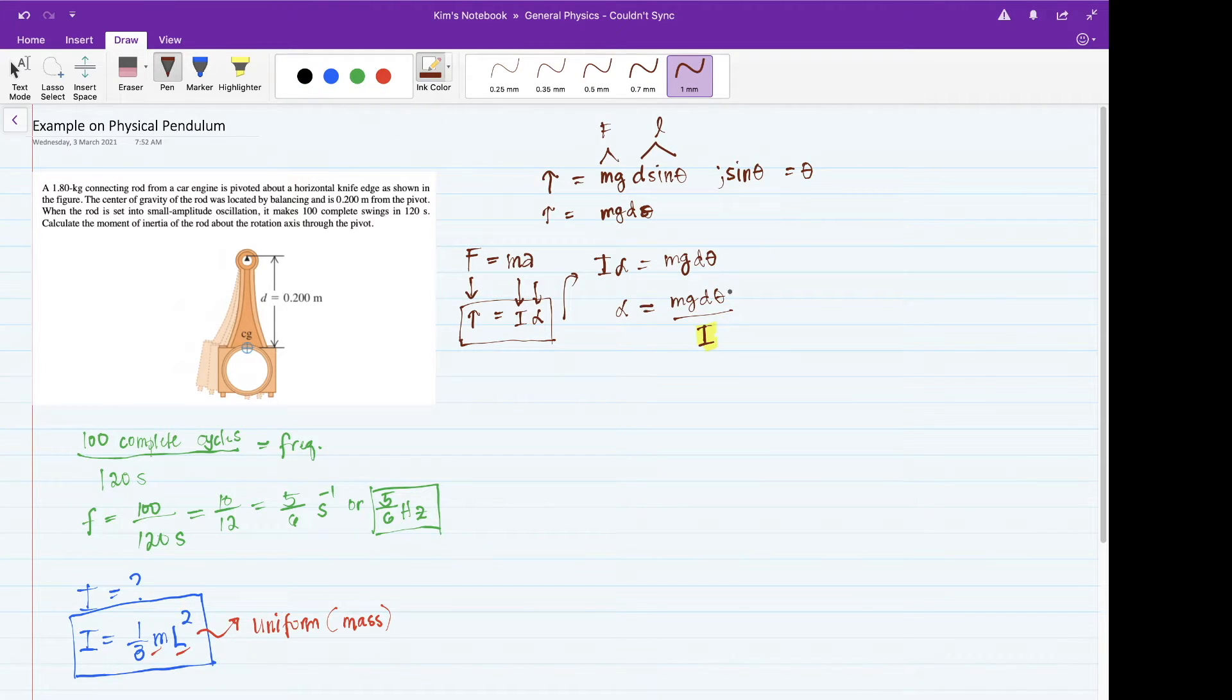Express that as alpha is equal to MgD theta all over the moment of inertia. Take note that the moment of inertia here is what is asked in the problem. From this expression, you need to recall something from the very basic first equations. We have actually this equation that alpha is equal to negative omega squared x. This was for the case of spring mass system. Since you also have alpha here, you can actually write that alpha is equal to, by the way, negative.